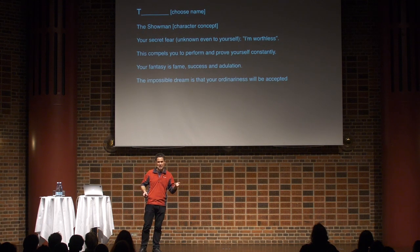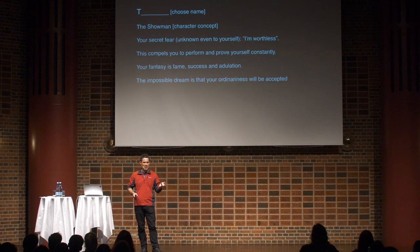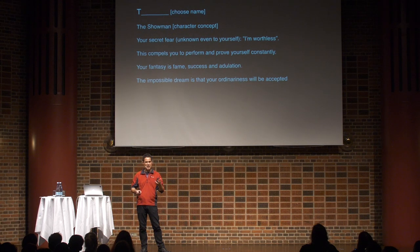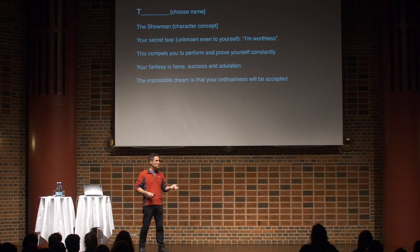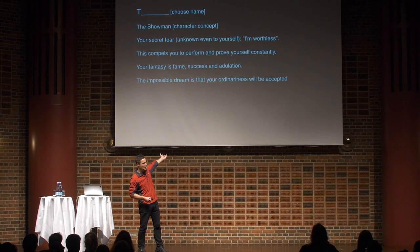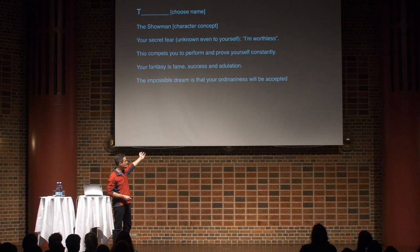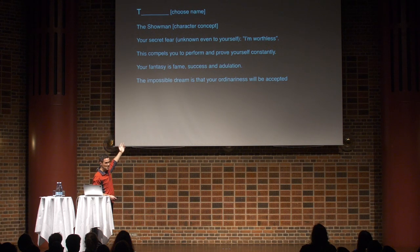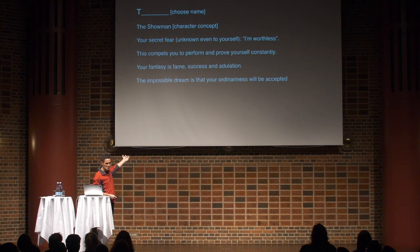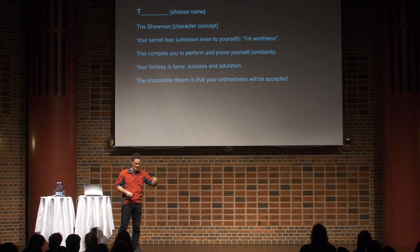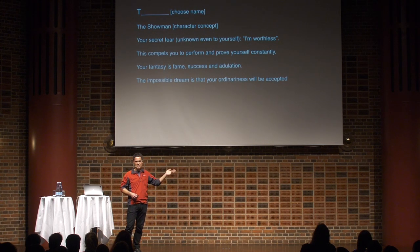Here's an example. This is from a LARP that Kevin Burns and I wrote called Real Men. It is set in the modern world — about a group of young men who meet as teenagers, revisiting them at various stages through their lives to see how they've grown up together. At the start, players were given skeletons structured like this: just an initial for the name (the player chooses the rest), the showman archetype or concept, a secret fear, a fantasy, and an impossible dream. These are aspects of the character important for how the LARP works as a whole, so they're given in the skeleton.